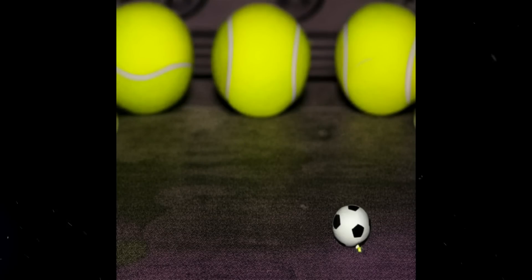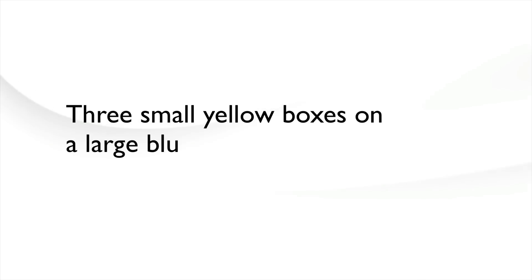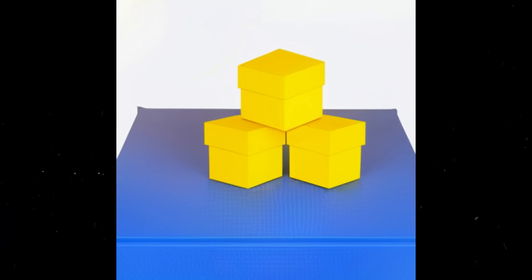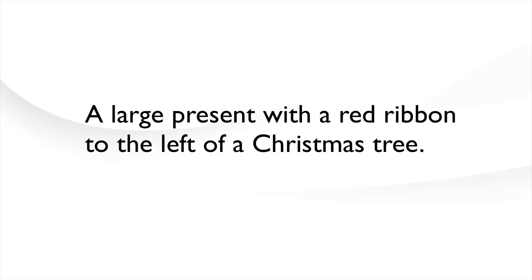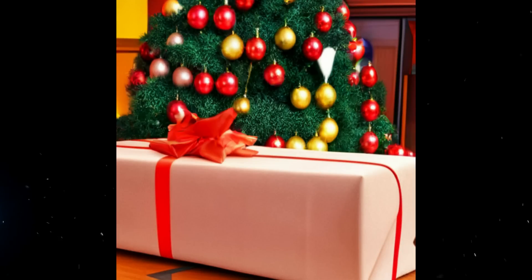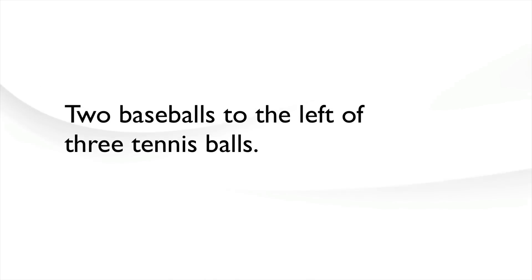A tiny football in front of three yellow tennis balls — another number, another spatial prompt. Three small yellow boxes on a large blue box. I had difficulty with something like this recently even with Mid Journey version 4, but it looks like Google Muse does really, really well with that. Here's a large present with a red ribbon to the left of a Christmas tree. Just in terms of composition, this is much more useful to translate these prompts into the real world. Two baseballs to the left of three tennis balls — that's exactly what we asked for.